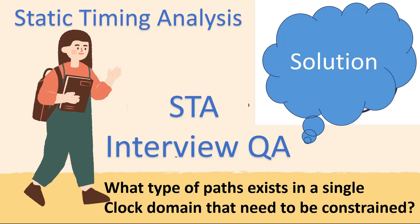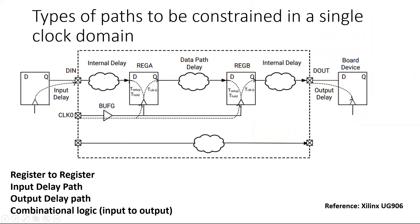Otherwise I am going to reveal its answer. Friends, as per my understanding, the type of paths that should be constrained in a design working on a single clock are: register to register path, input delay path, output delay path, and combinational logic that is input to output. We'll discuss each one of them in detail.